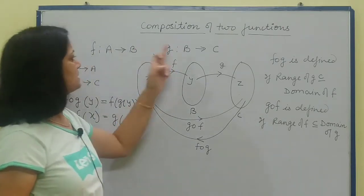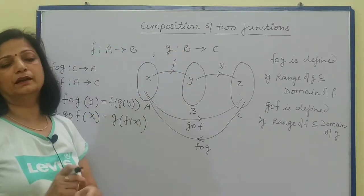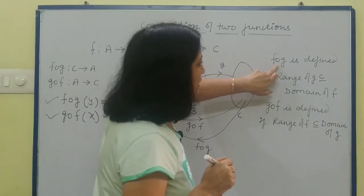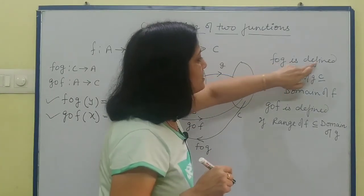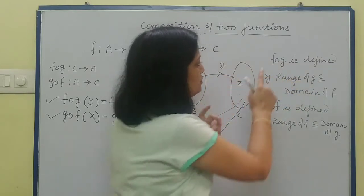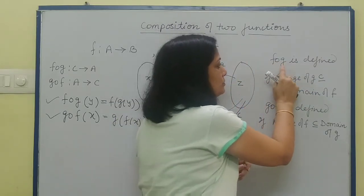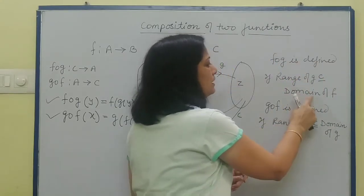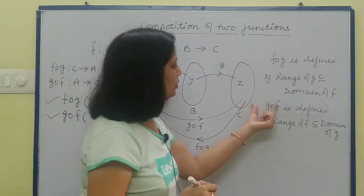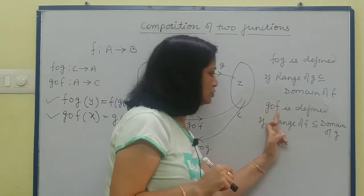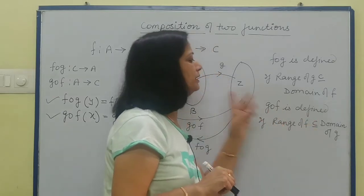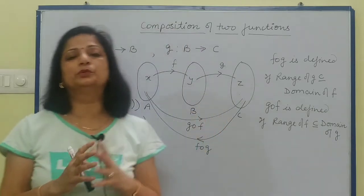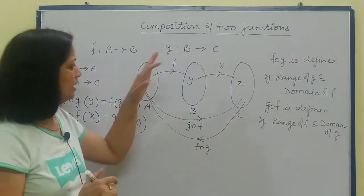Now what does 'defined' mean? Here we took the same set B, but if these sets are different, suppose some other different set, then what will be the condition? fog, that is f composition g, is defined if range of g, which is the second function here, its range should be subset or equal to the domain of the first function. Second, gof will be defined when range of f is subset or equal to domain of g. Both these conditions must be fulfilled for composition to be applied.